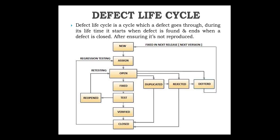If the defect is not in the duplicate, rejected, or deferred states, then it is a new defect and we need to work on it. We open it and resolve it — meaning we fix the defect. After fixing, we test whether it is actually fixed. If the defect occurs again with the same input, we reopen it and retest it.